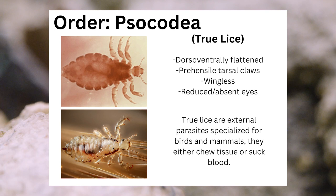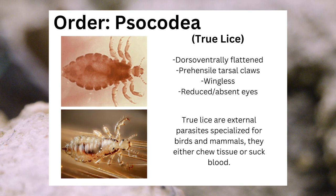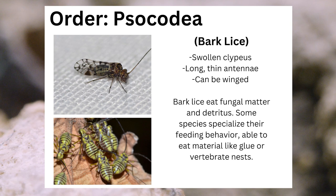The order Psocodea, known as lice, has two main groups. True lice can be identified by their dorsal-ventrally flattened bodies, their prehensile tarsal claws, their winglessness, and their reduced or absent eyes. True lice are external parasites specialized for birds and mammals; they either chew tissue or suck blood. Bark lice, the other group of Psocodea, can be identified by their swollen clypeus, their long thin antennae, and their wings. Bark lice eat fungal matter and detritus, with some species able to eat glue or vertebrate nests.